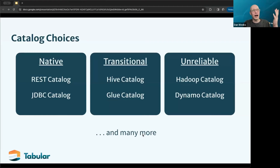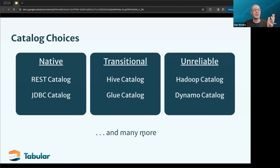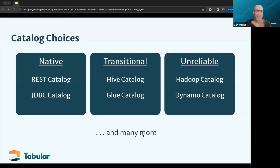I put these six catalog implementations into different categories: native for Iceberg, transitional, and unreliable. We'll talk through each one and understand why they were placed in those categories.